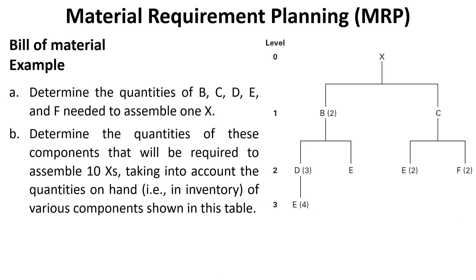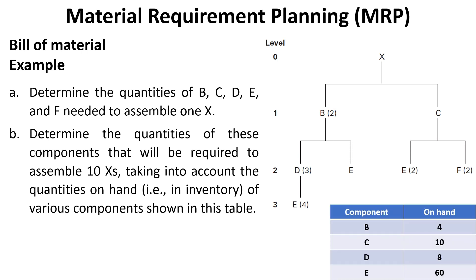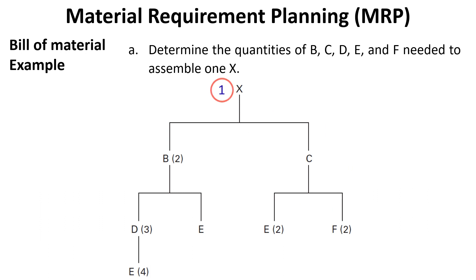Let us solve an example. Use the information presented to do the following: determine the quantities of B, C, D, E, and F needed to assemble one X. Then determine the quantities of these components that will be required to assemble ten X's, taking into account the quantities on hand — i.e., in inventory — of various components shown in the table. For the first question, to produce one X, two B's are required, so B equals two multiplied by one, which equals two. To produce one X, one C is required, so C equals one multiplied by one, which equals one.